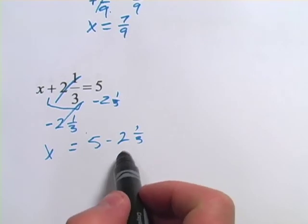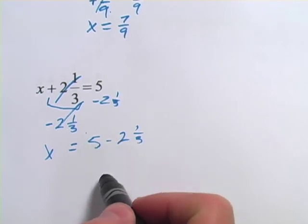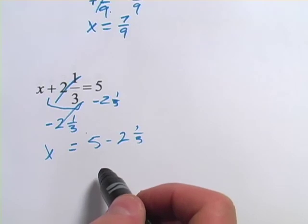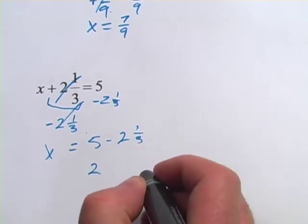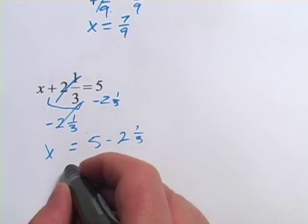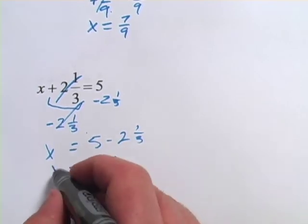And now over here we've got 5 minus 2 and 1 third. That might be tricky. I would do it in two steps. I would say 5 minus 2 is 3 and 3 minus 1 third, well you can think of that as having a 2 left over and then 1 minus 1 third would be 2 thirds. You could also try that in a different way.